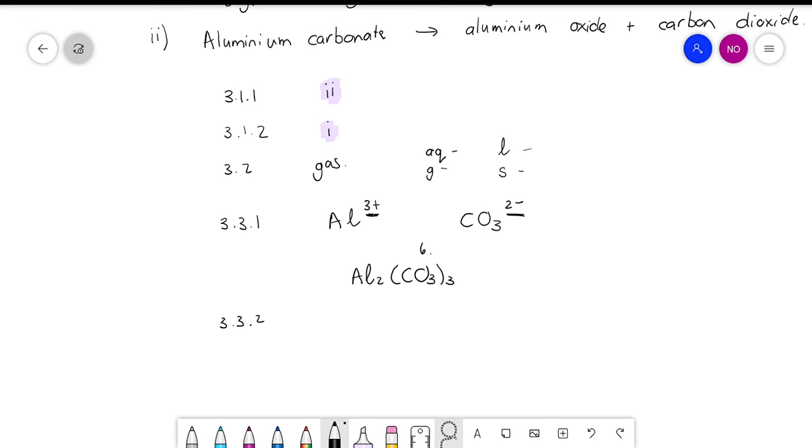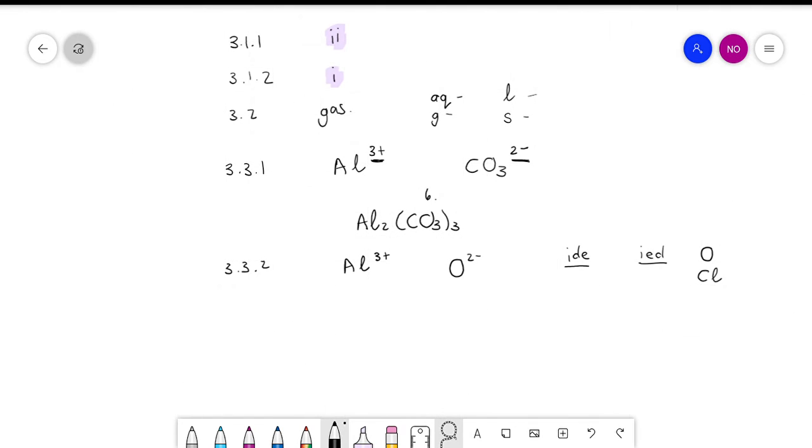They ask you for aluminum oxide. So now oxide is, the IDE, or in Afrikaans the idee, means it is just O. Or if it was chloride, then it would only have been CL, or sulfite or nitrite. So all of those monoatomic anions, they end in IDE in English and idee in Afrikaans. Okay, so we have aluminum 3+, oxygen 2-, so once again, we go towards 6.